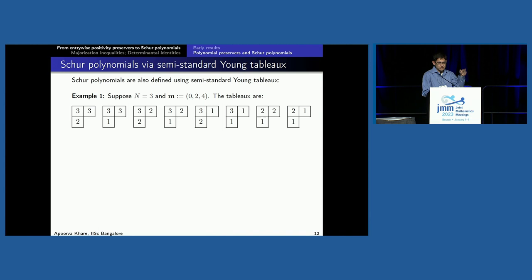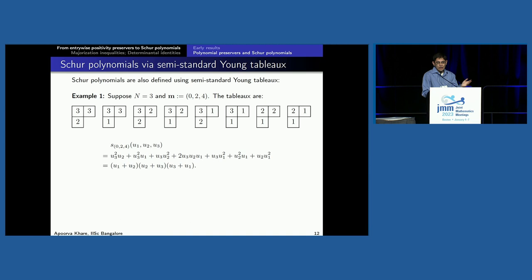I left-adjust this Young diagram, then fill it up with entries from 1 through N (the alphabet). For semi-standard Young tableaux, entries must weakly decrease along every row and strictly decrease down every column. You fill up the three-cell shape in all possible ways using 1, 2, and 3 — there are eight different ways. For every filled-up semi-standard Young tableau, you write down its weight: U₃²U₂ for the first one, U₃²U₁ for the second, and so on. You add all of them up — noting the fourth and fifth tableau have the same weight U₁U₂U₃ — and this is the Schur polynomial.